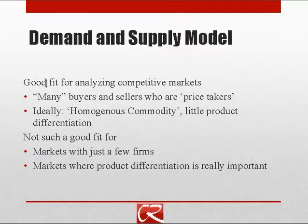Ideally we're also talking about what's sometimes called a homogeneous commodity, or a situation where there is little product differentiation. If sellers each offer a different variety of the product and those differences are really important, then it isn't appropriate to consider all the sellers in one market. The demand and supply model isn't a good fit for markets with just two, three, or four firms, or where product differentiation is really important.